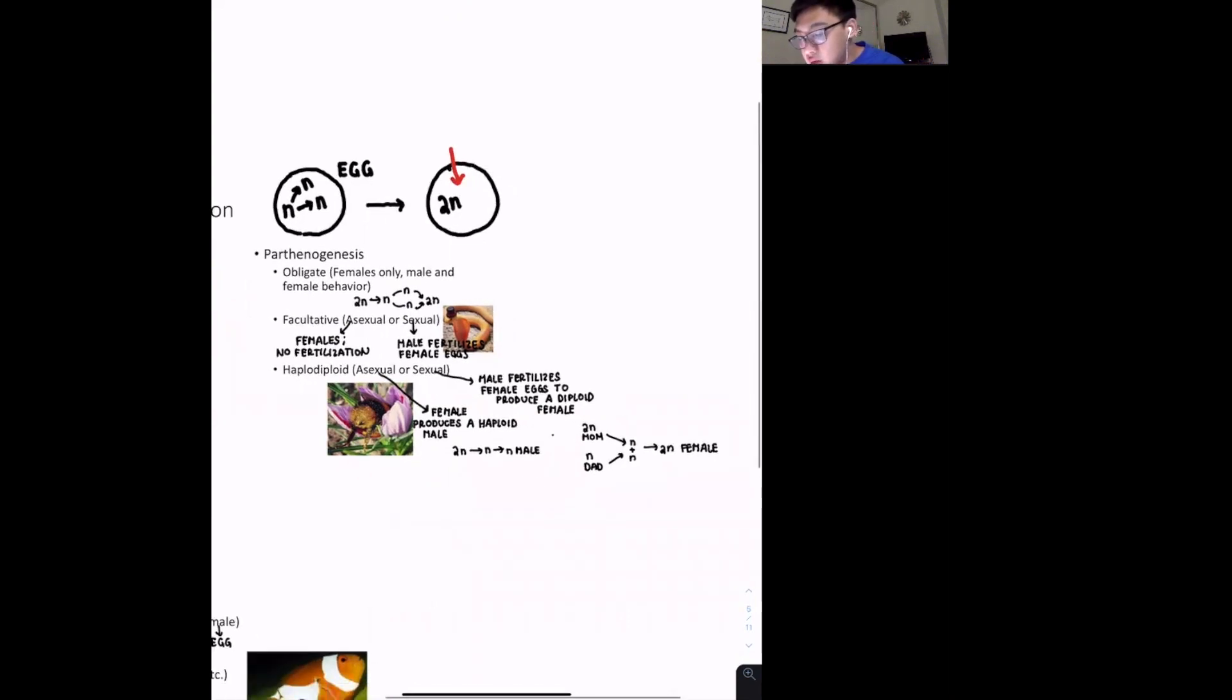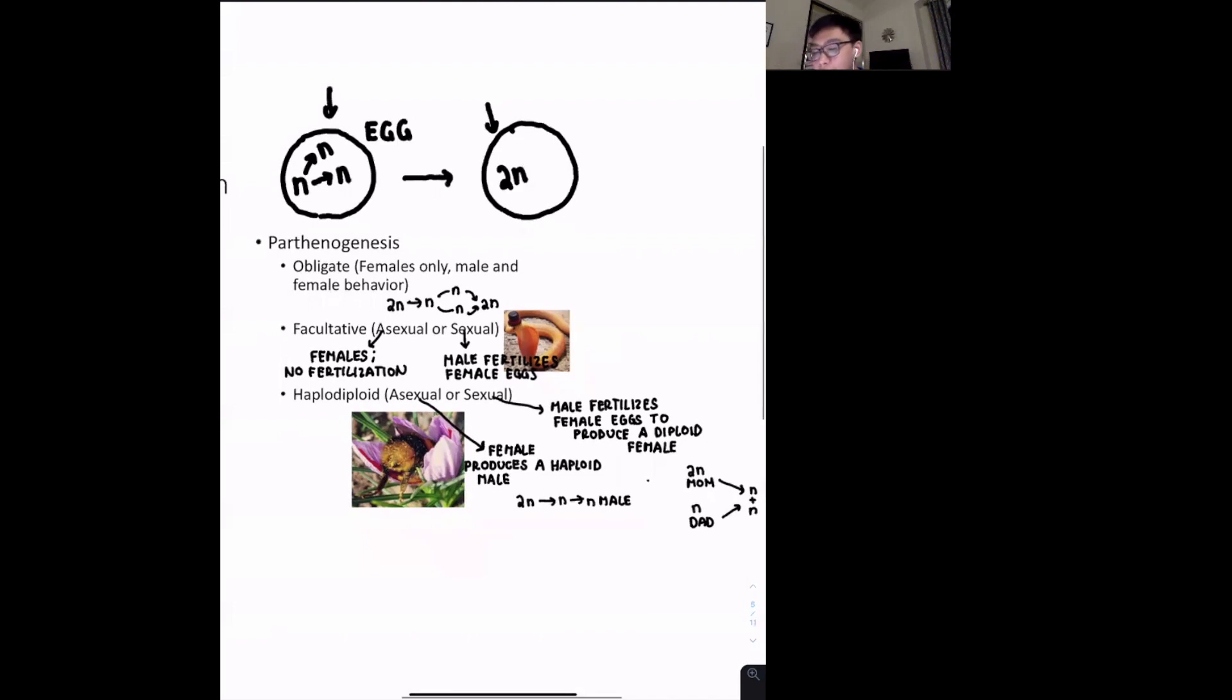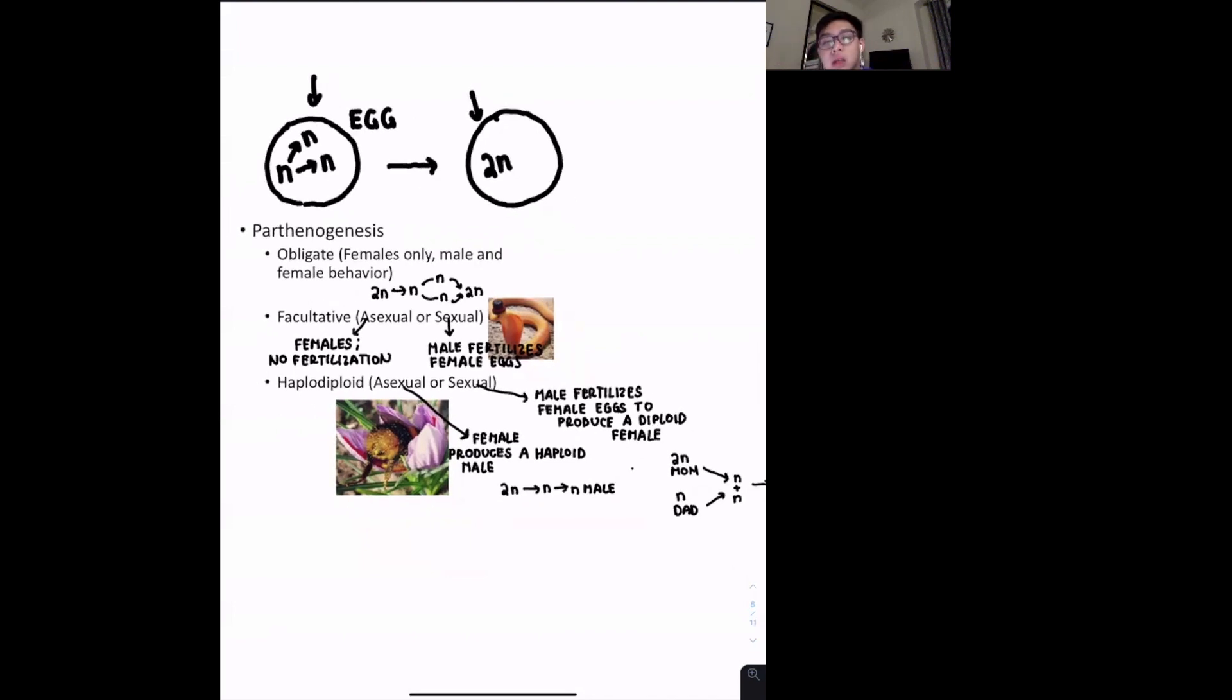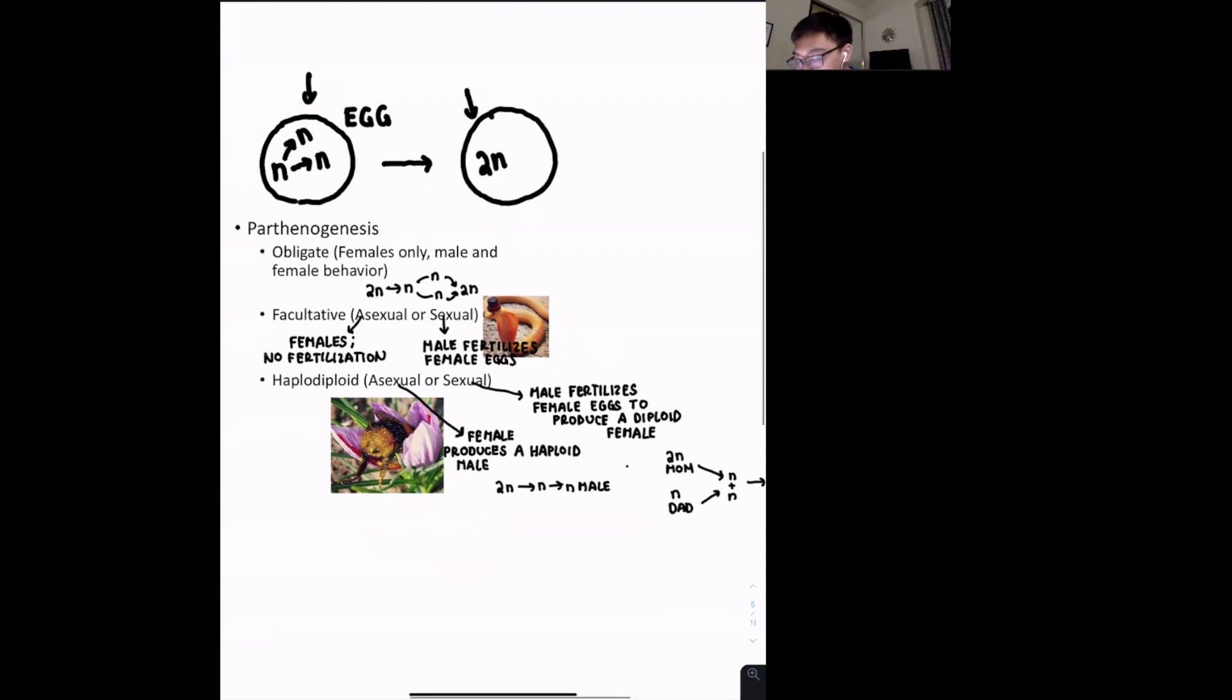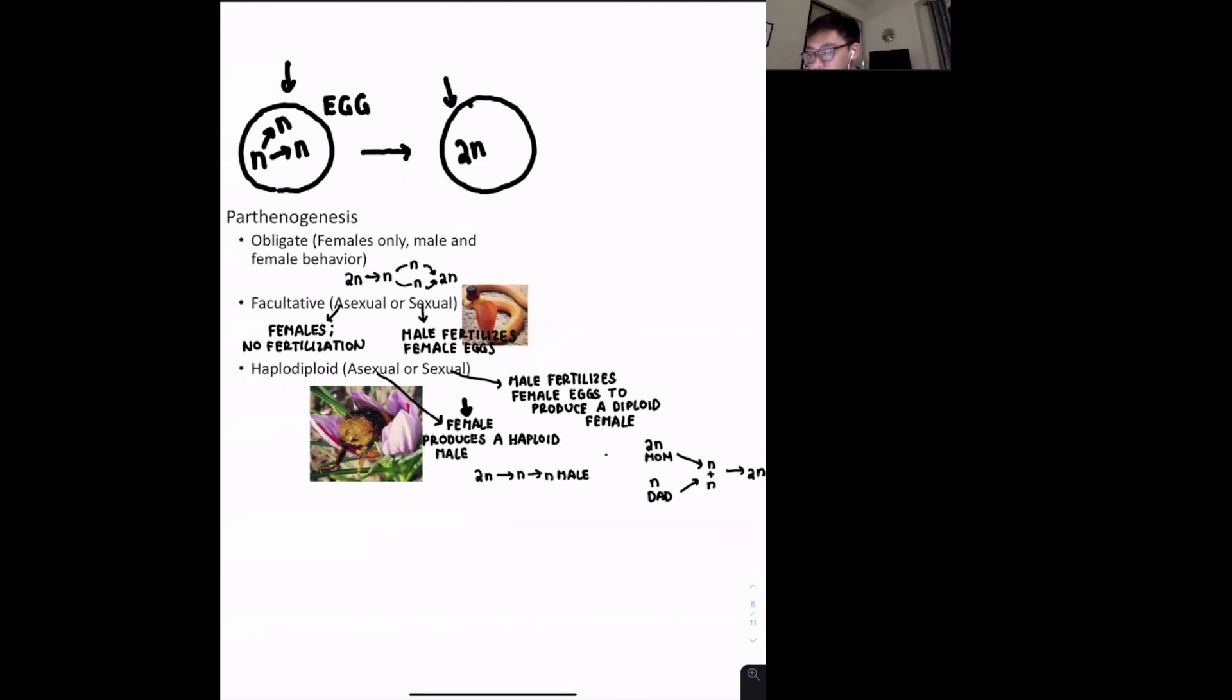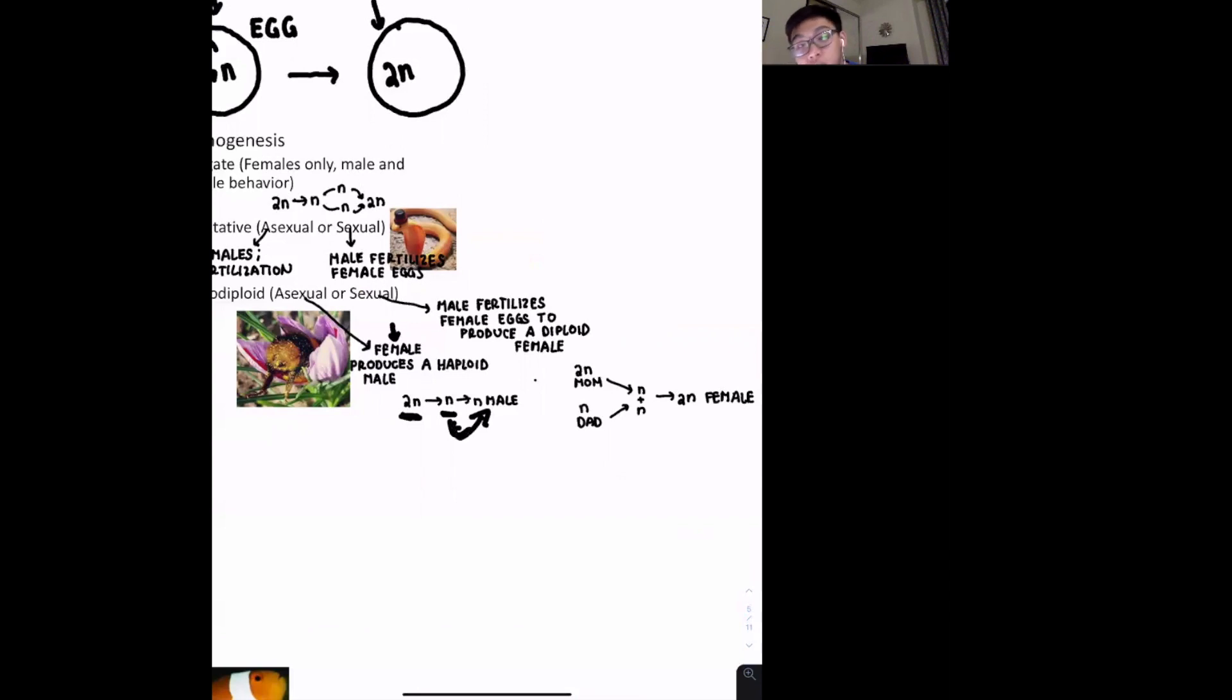We have facultative. And so these have asexual cycles, so they reproduce by parthenogenesis, but they also have sexual reproduction cycles where a male fertilizes the female egg and then therefore develops a child that way. We also have what we call the haplodiploid. And so for haplodiploids, it's kind of a special case where we have asexual and sexual cycles. But for the asexual cycle, the female is going to produce a haploid male. In the case of the sexual cycle, we'll have a male fertilizing the female egg and they'll produce a diploid species that is always going to be female.